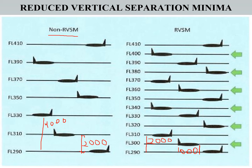With RBSM, the airspace remains the same — flight level 290 to 410 — but now we are accommodating more aircraft in that particular area. The vertical separation in the opposite direction is now 1,000 feet and for same-heading aircraft it is 2,000 feet. This is the key benefit of RBSM.